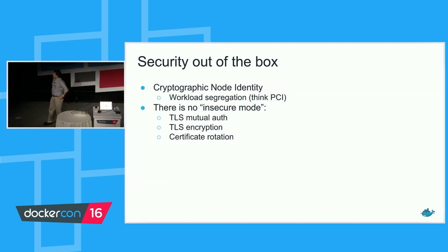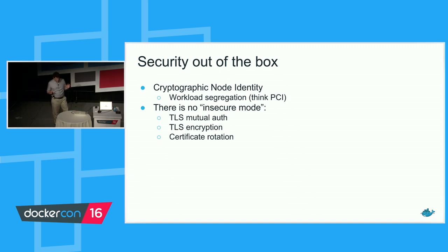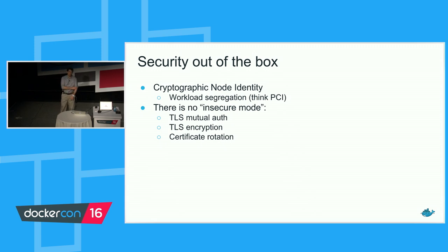Lastly, security out of the box. There's cryptographic node identity, which you can use for workload segregation such as payment card processing. There is no insecure mode in Docker 1.12 orchestration — no way to turn off security. We did this intentionally: security should be so simple that you don't want to turn it off. I've watched engineers on my team using it without even noticing it, with no objections — which I've never seen before on an engineering team. We've put a lot of thought into building an architecture that is secure by default.